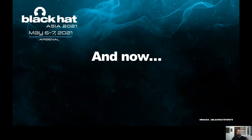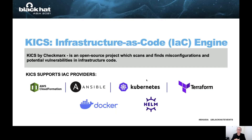Now that we understand the problem, I'll let Ori walk us through the solution. KICS stands for Keeping Infrastructure as Code Secure. It is an open-source project which scans and finds misconfigurations and potential vulnerabilities in infrastructure code — just like SAST scans application source code and finds vulnerabilities. KICS scans infrastructure code and finds misconfigurations in it. KICS supports the top infrastructure code providers, including AWS CloudFormation, Ansible, Kubernetes, Terraform, Docker, and Helm, with much more to come.